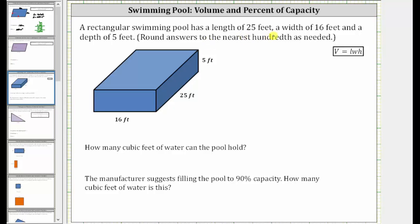A rectangular swimming pool has a length of 25 feet, a width of 16 feet, and a depth of five feet.